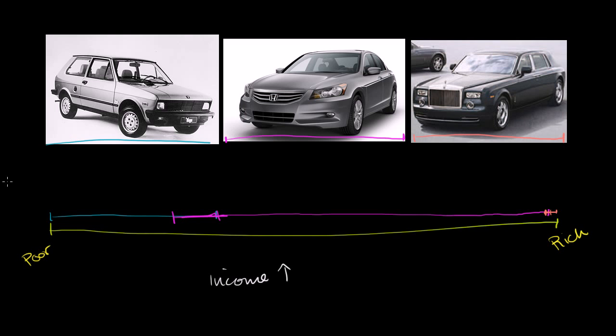So what happened here? When income went up, the quantity demanded at a particular price point for this smallest car went down, but the demand for this mid-sized car went up.